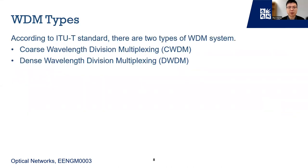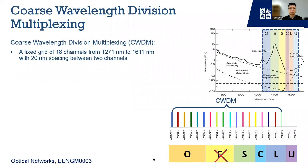WDM is popular, but a standard is needed to allow components to be compatible with each other. Currently, there are two types of WDM standards: coarse wavelength division multiplexing, or CWDM, and dense wavelength division multiplexing, or DWDM. CWDM provides a fixed grid of 18 channels from 1271nm to 1611nm with 20nm spacing between adjacent channels.